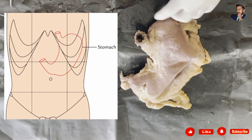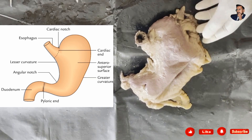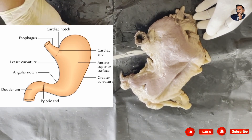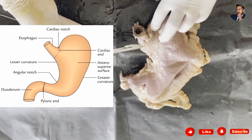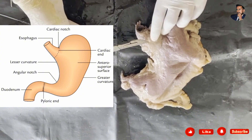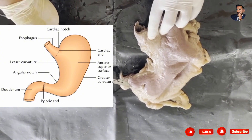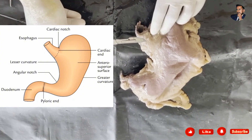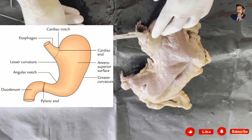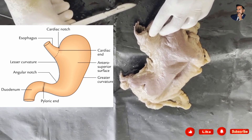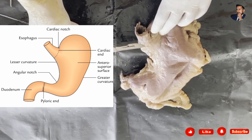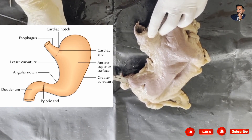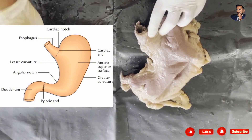Now we have to know about the external features of the stomach. It consists of the cardiac end and below this is known as the pyloric end. The cardiac end continues above with the esophagus, while the pyloric end continues downwards with the duodenum, as you can see in the diagram.